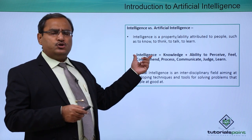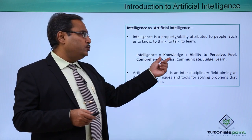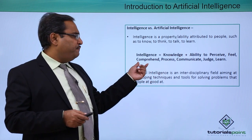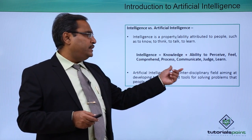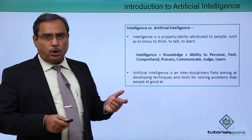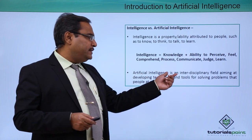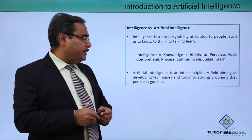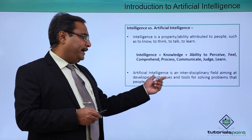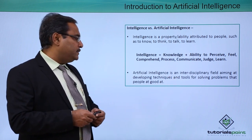Intelligence can also be written in this way: Intelligence is equal to knowledge plus the ability to perceive, feel, comprehend, process, communicate, judge, and obviously also learn. Artificial intelligence is an interdisciplinary field aiming at developing techniques and tools for solving problems